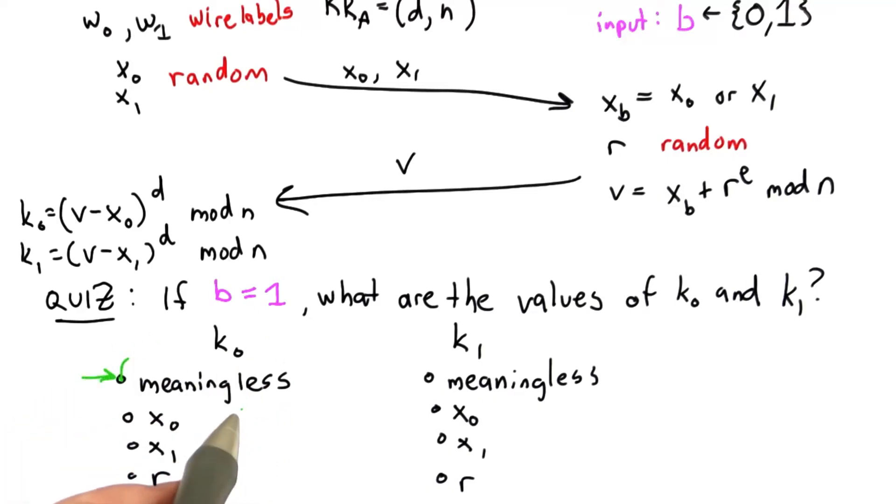So the answer is, the value of k0 is meaningless, as long as we have a good random distribution when we raise a to the e power.